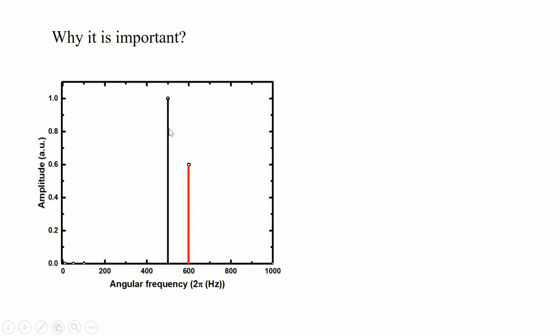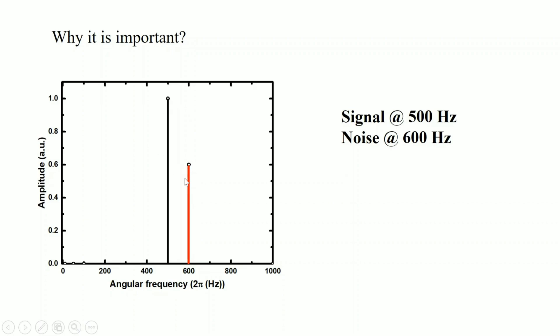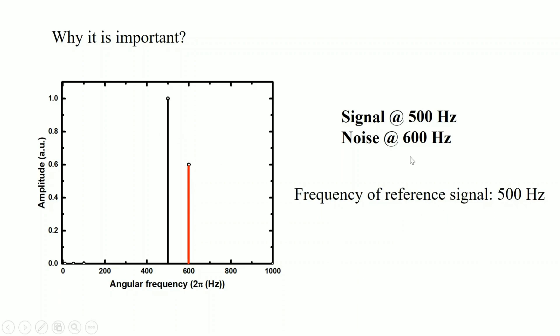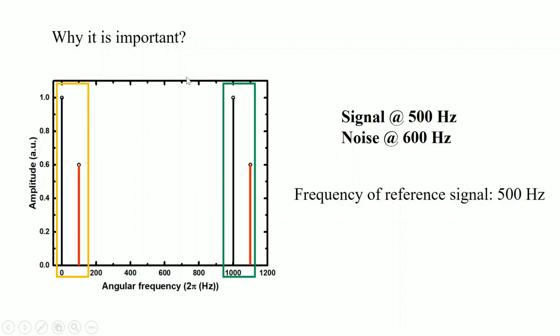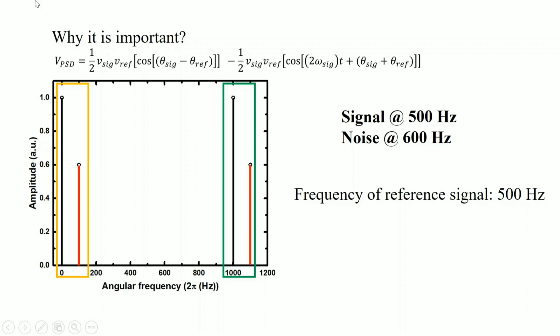Now, why is the time constant important? To understand this, consider an example where we have two signals: our original input signal at 500 Hz and a noise signal at 600 Hz. We need to separate our signal from this noise. The reference signal frequency is 500 Hz, the same as our signal frequency. When the lock-in multiplies the reference and the signal, we get two components: a low-frequency (DC) component and a high-frequency component — both for the signal and for the noise. The signal's DC component is at 0 Hz and its high-frequency component is at 1 kHz.